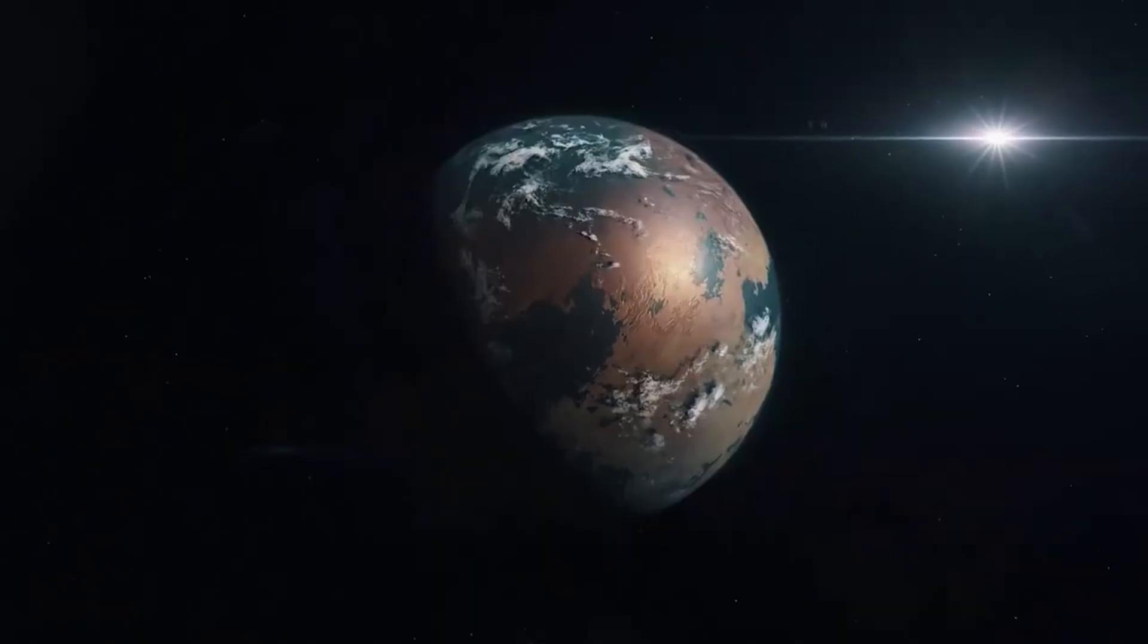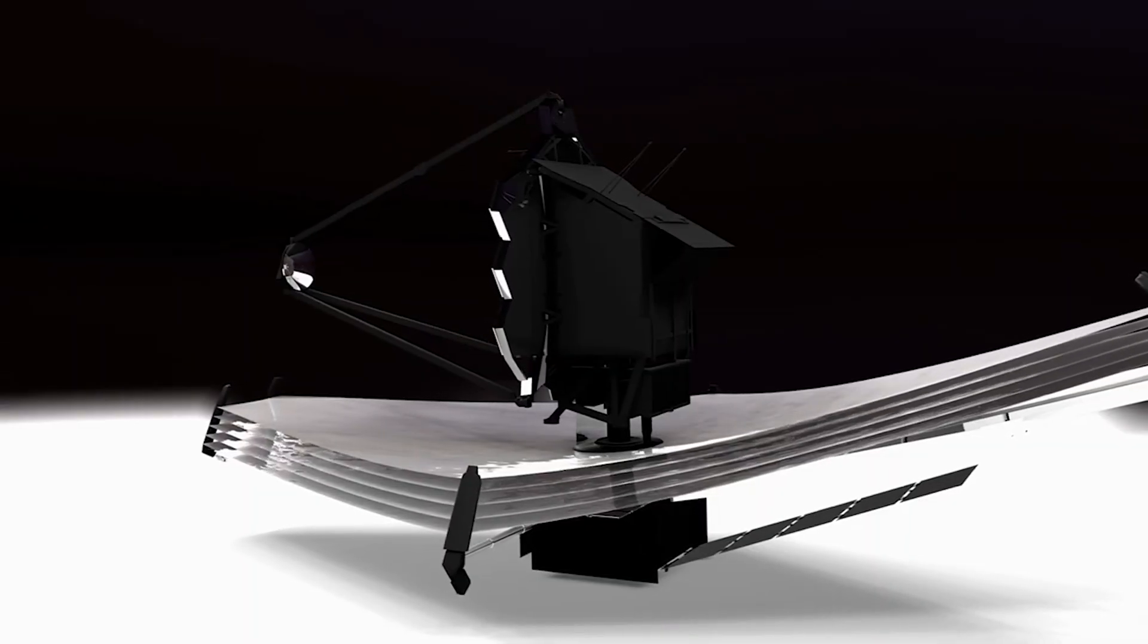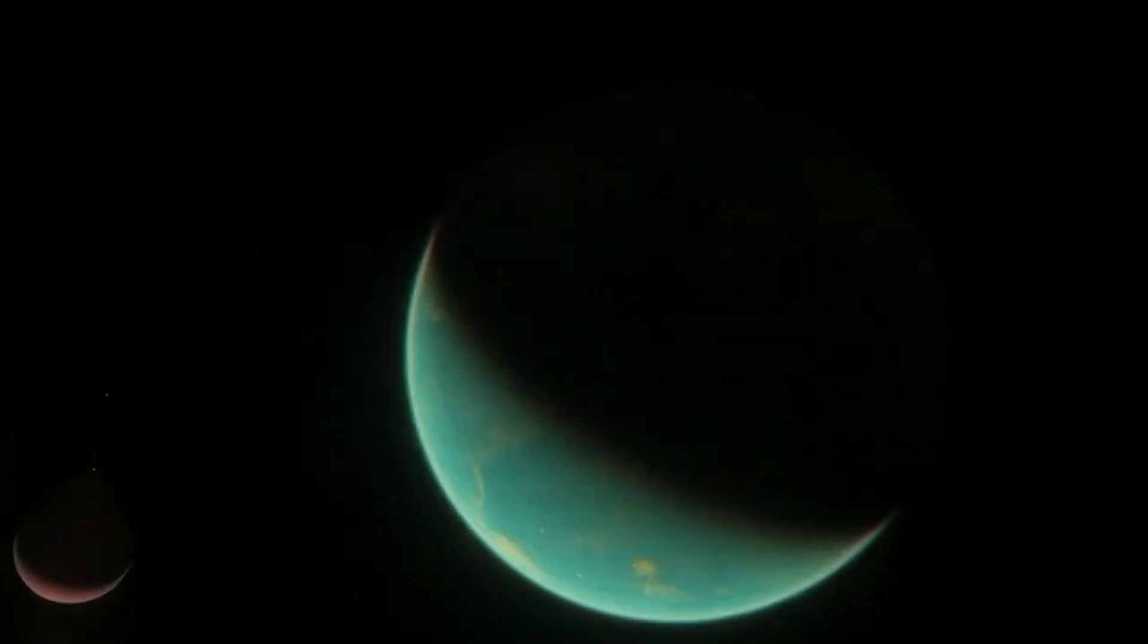Some exoplanets orbit two suns, like Tatooine from Star Wars, while others follow elongated and eccentric orbits that defy our expectations based on the familiar structure of our own solar system.